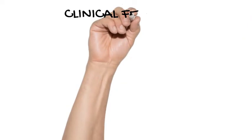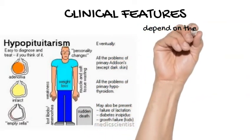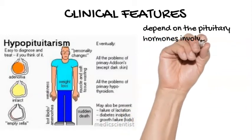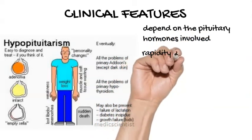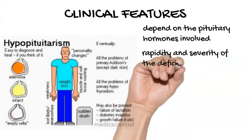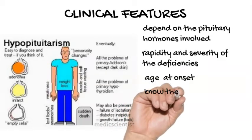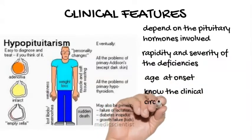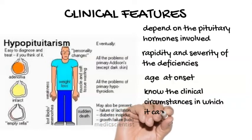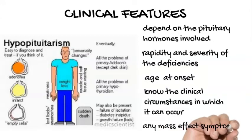Clinical features. Clinical manifestations of hypopituitarism depend on the pituitary hormones involved, which may be one, a few, or all — called panhypopituitarism — as well as the rapidity and severity of the deficiencies and the age of the patient at onset. Signs and symptoms are often subtle. Patients in whom hypopituitarism is due to a sellar mass may also have symptoms related to the mass, such as headache, visual loss, or diplopia.